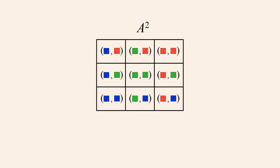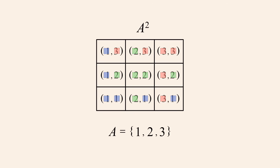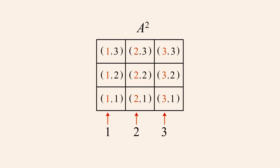Or, if instead of set A containing colored squares, set A contained numbers, we could locate any position in the grid by specifying the numerical value of the first and second elements of an ordered pair.